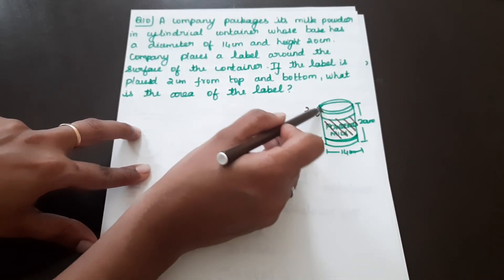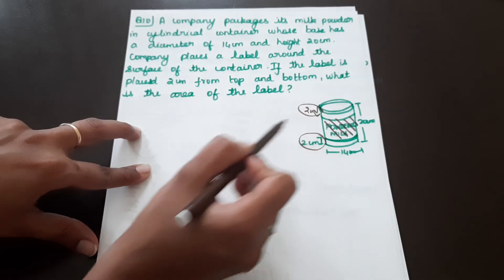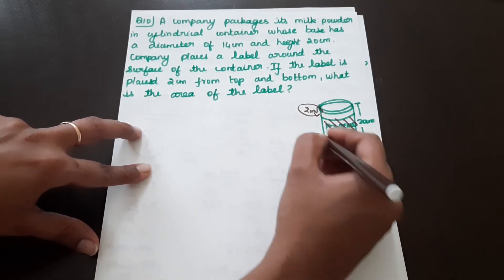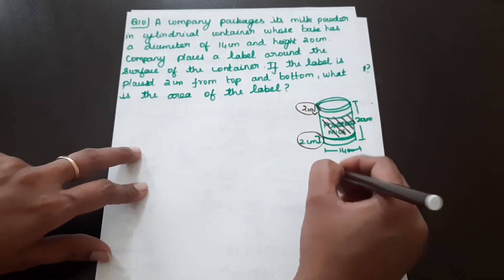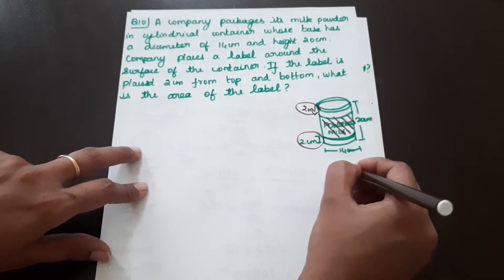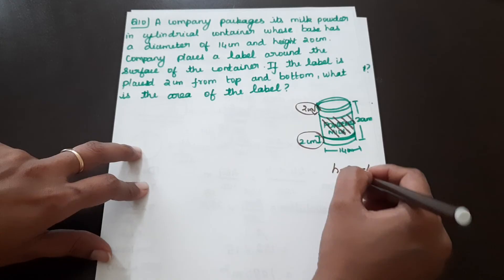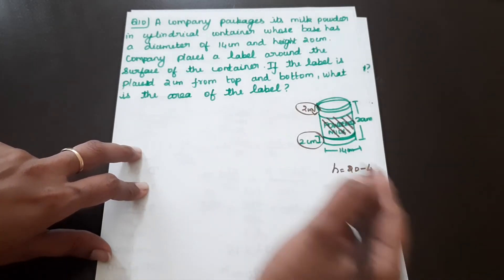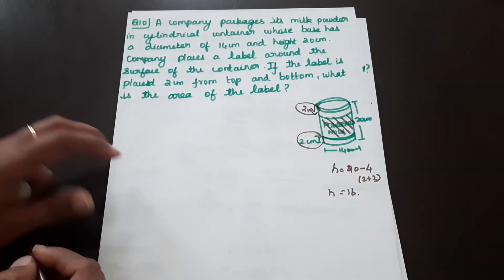Since the label is 2 cm from the top and 2 cm from the bottom, the effective height of the label is less than 20 cm. Height of label equals 20 minus 4 — because 2 plus 2 equals 4. So the height of the label equals 16 cm.